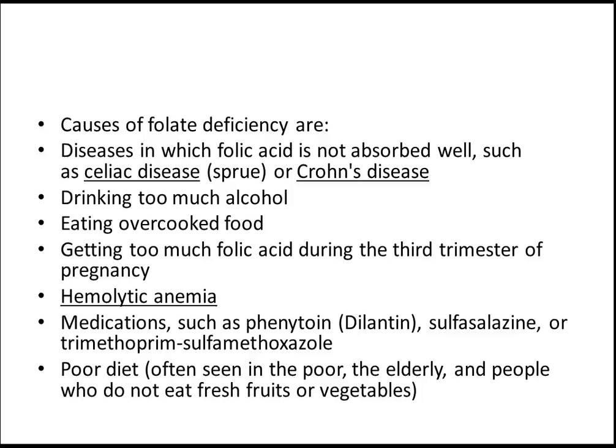Other causes include drinking too much alcohol, eating overcooked food, and increased folic acid requirements during the third trimester of pregnancy — folic acid is given to every pregnant woman because requirements are higher during pregnancy. Hemolytic anemia medications are also important — such as phenytoin. If a USMLE question shows a patient on phenytoin with anemia, think of folate deficiency. Other important drugs include sulfasalazine and trimethoprim-sulfamethoxazole.